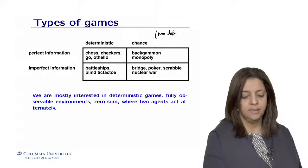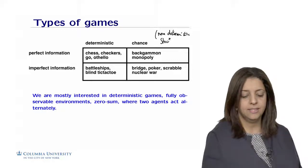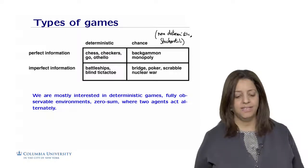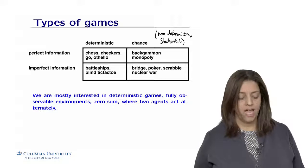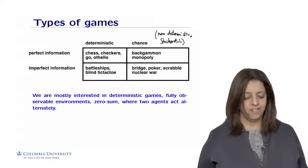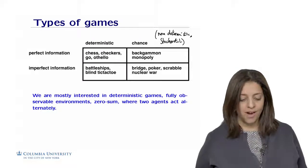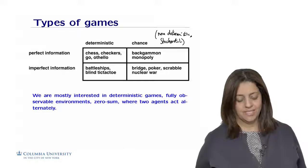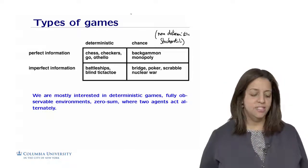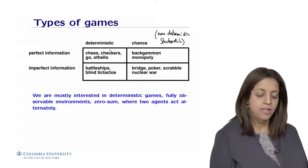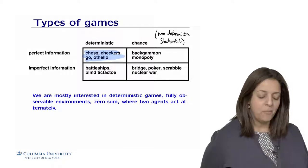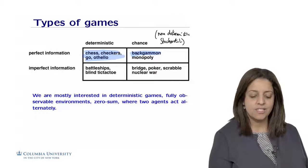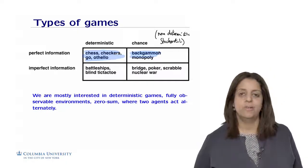We also distinguish deterministic games versus non-deterministic or stochastic games, where chance is introduced by shuffling cards or rolling dice. Deterministic games with perfect information are chess, checkers, Go, and Othello. Those with imperfect information are battleship and blind tic-tac-toe. Games with chance and perfect information are backgammon and Monopoly. Those with imperfect information and chance are bridge, poker, scrabble, and nuclear war. In this lecture, we focus on deterministic games with fully observable environments or perfect information.